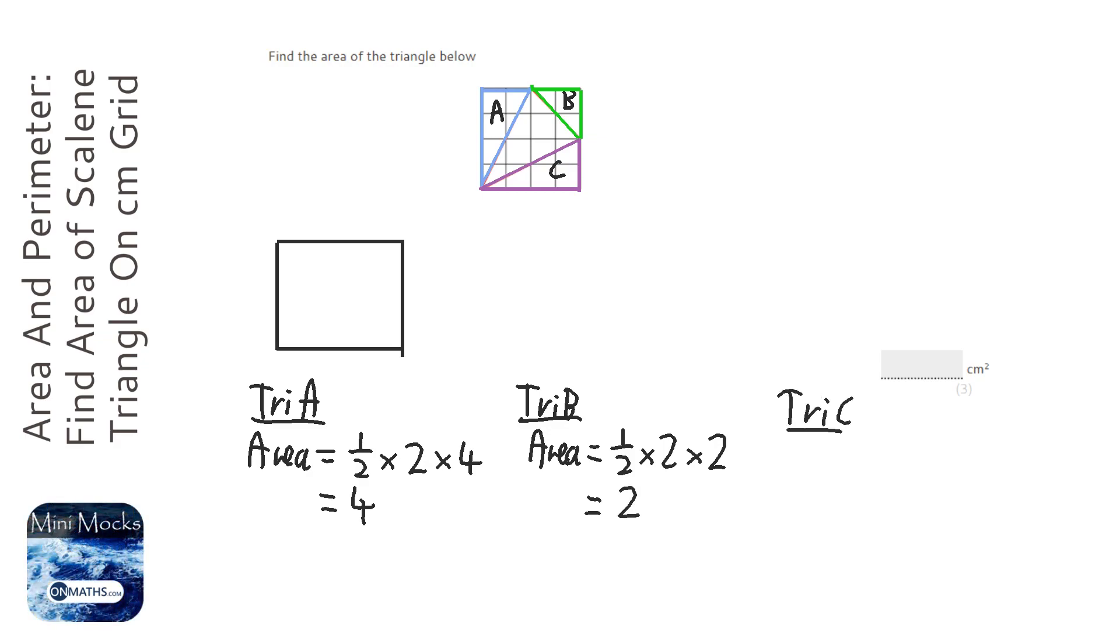And then triangle C, the area is going to be half times the base, which is four, times the height, which is two. So that's going to be four as well.